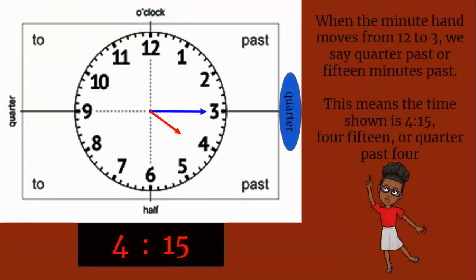When the minute hand moves from 12 to 3, we say quarter past, or 15 minutes past. This means the time shown is quarter past 4.